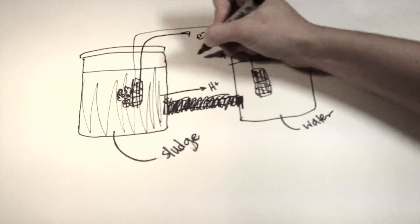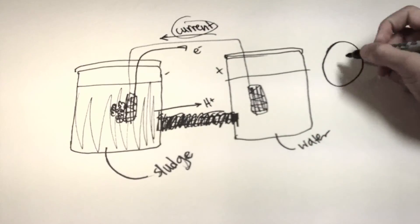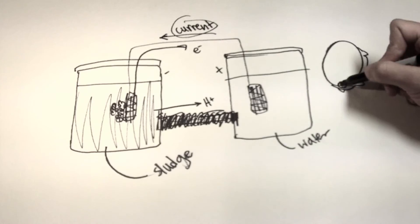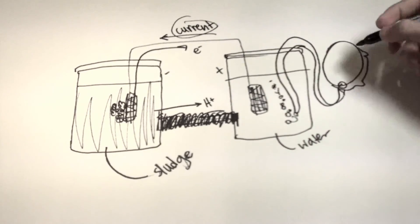The electrode in the water is the cathode, and the electrode in the sludge is the anode. Current flows from the cathode to the anode. We used an aquarium air pump to supply oxygen to the water. We found that this increased the efficiency of the microbial fuel cell. Now we have an electricity generating circuit.